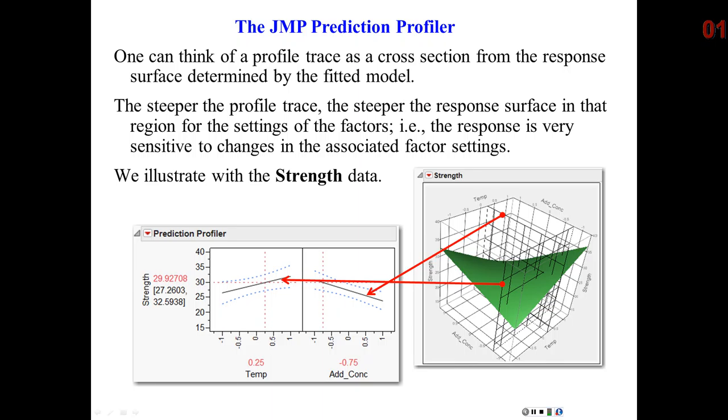To the right is a 3D view of the response surface. You saw this earlier in the analysis of the strength data. And I have added a couple of grids, or slices, and these slices are at the settings 0.25 for temperature.